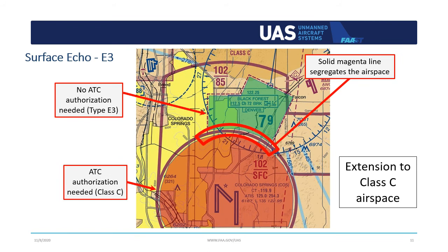Here's an example of an Echo 3 extension. Echo 3 extensions are associated with Class Charlie airspace. Like Echo 4, Echo 3 extensions are segregated from the adjacent airspace. In this case, because the adjacent airspace is Class Charlie, a solid magenta line is used. And like Echo 4, operations in Echo 3 airspace do not require an airspace authorization.